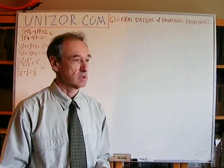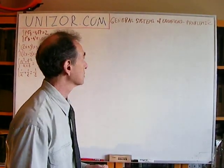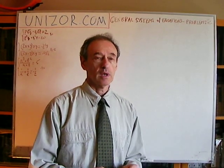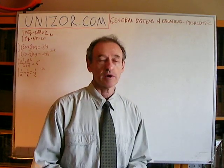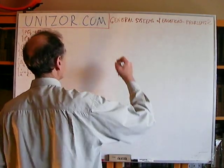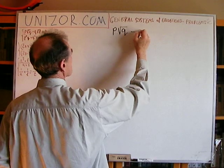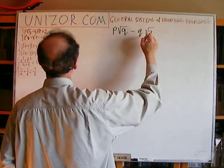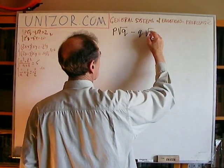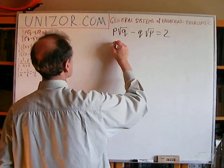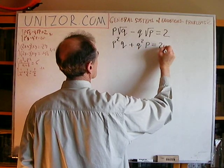So, this is in a topic which I called problem number two of general systems of equations. Three problems — I'm going to present them and solve them, and then you can compare your solutions to mine. Problem number one: P times the square root of Q minus Q times the square root of P equals 2; and P-squared Q plus Q-squared P equals 20.